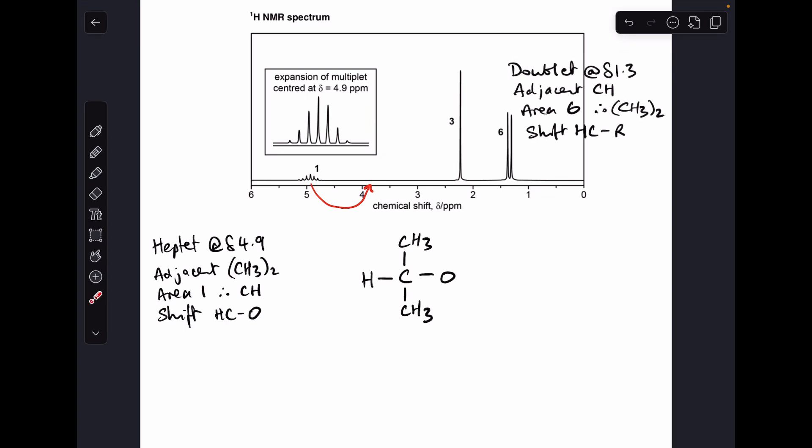The sensible thing to do now is to look at the other half of that splitting story. We've already talked about this proton being split by them so these protons are going to be split by that and that's what we've got going on here. This is a doublet and that means there's an adjacent CH, area six so there's six hydrogens causing the signal which is obviously these two CH3 groups that are equivalent to each other. The shift value is H to C to R so we've got these six equivalent protons being split by that single proton there.